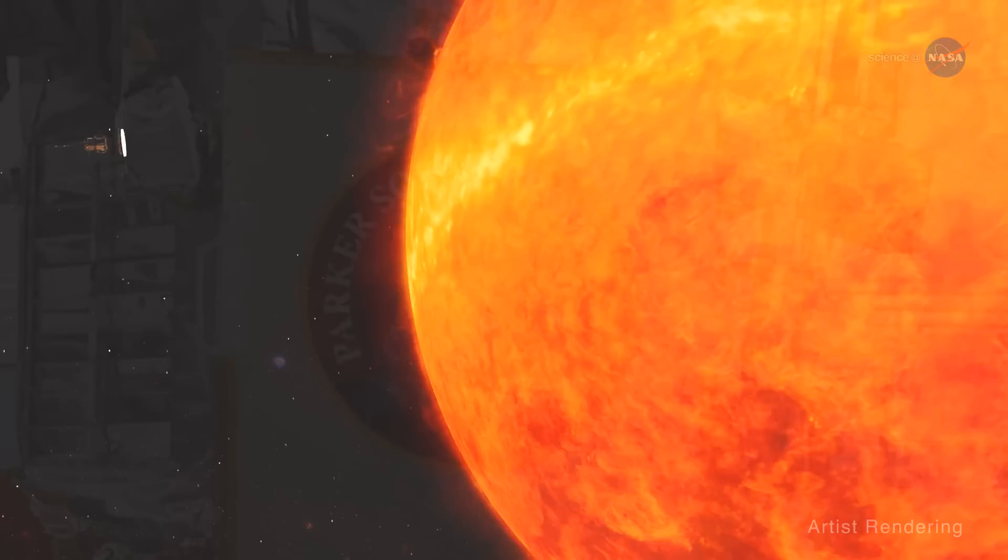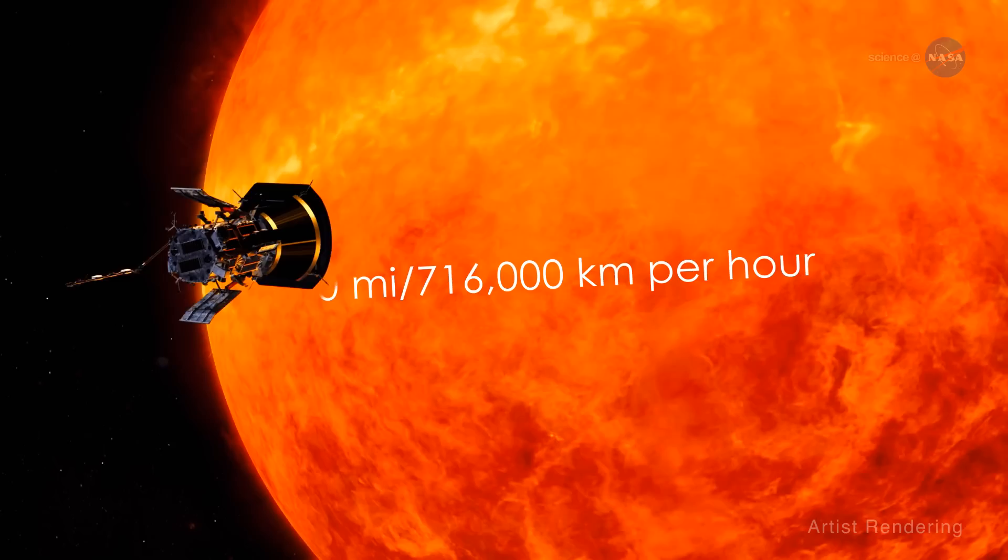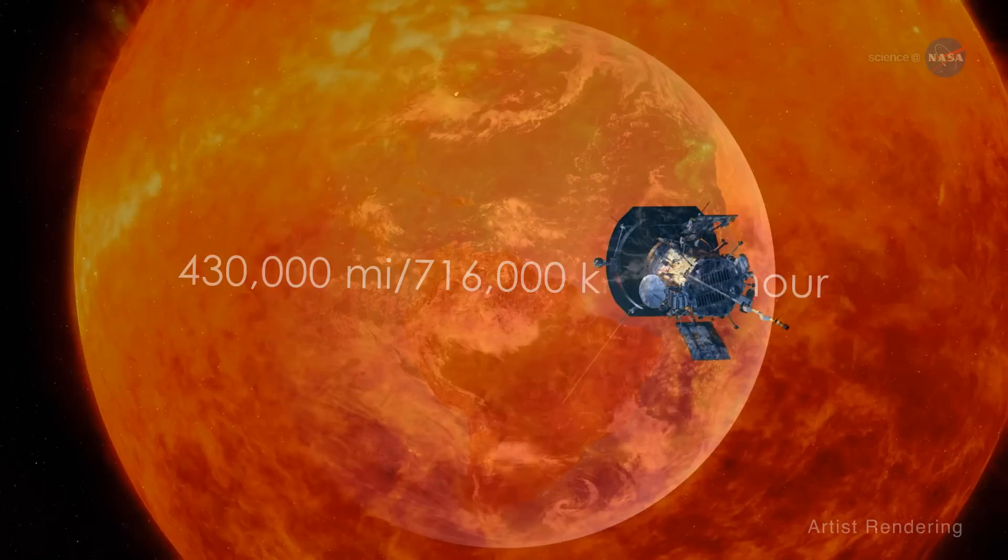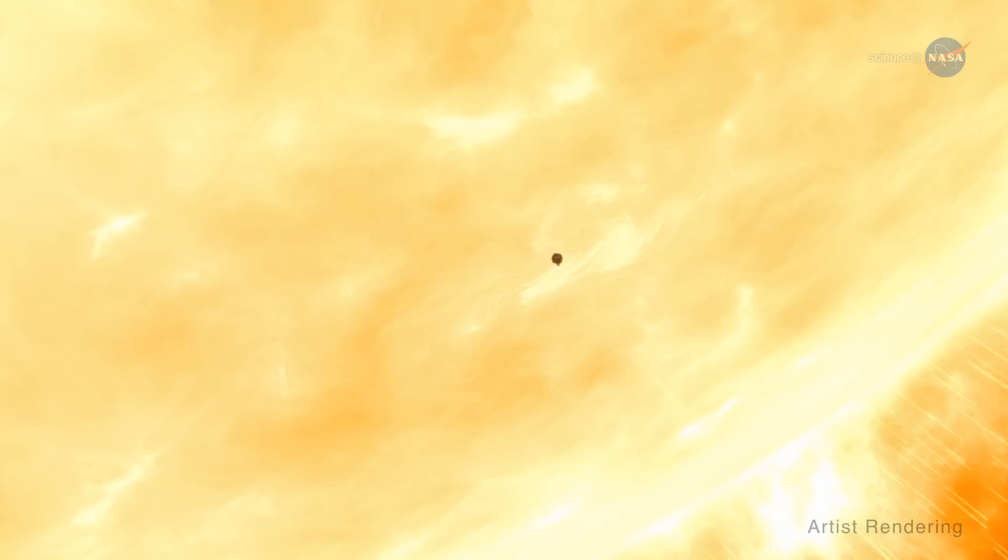Clever indeed! At its fastest speed, the Parker Solar Probe will orbit the sun at 430,000 miles per hour or 716,000 kilometers per hour. That's fast enough to get from New York City to Tokyo in under a minute.